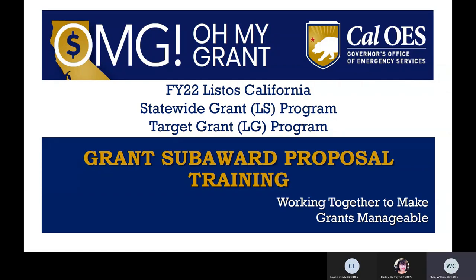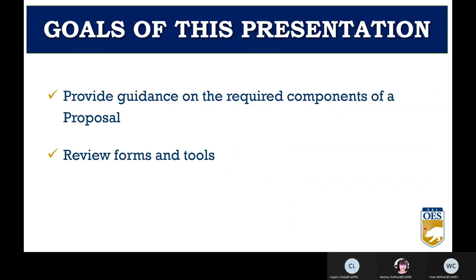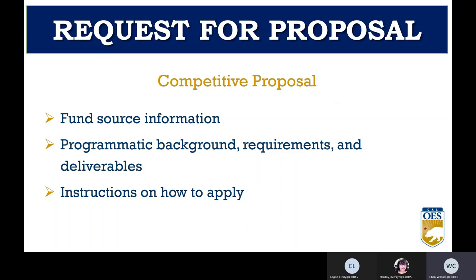Thanks, Cindy. Hi, my name is William Chan. I'm the program specialist with the Listos Grants Unit. Today we are going to provide guidance on the components required in a proposal, review the forms referenced earlier, and familiarize you with some tools that are available. The process of submitting a proposal begins with the Request for Proposal being released — our competitive process. Within the RFP, you will find fund source information, the background of the program, requirements, expected deliverables, and instructions on how to apply.